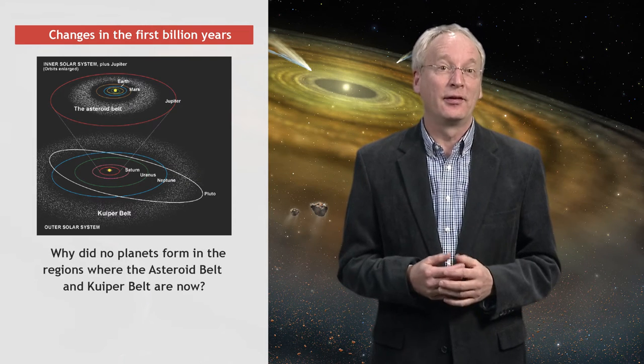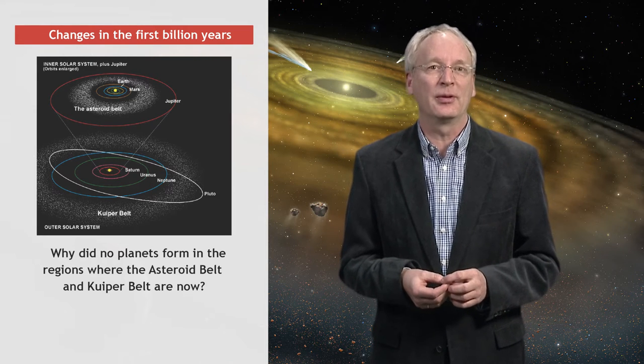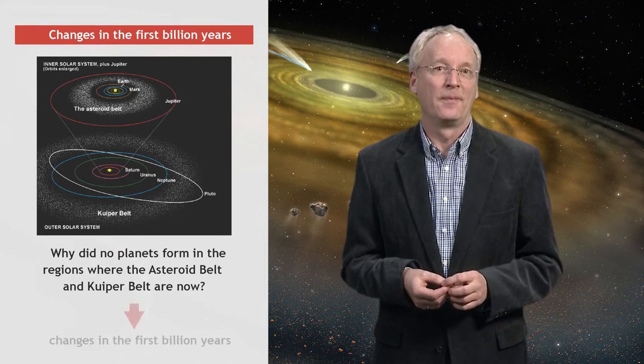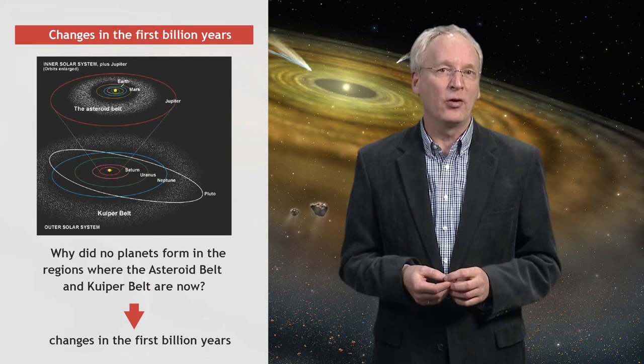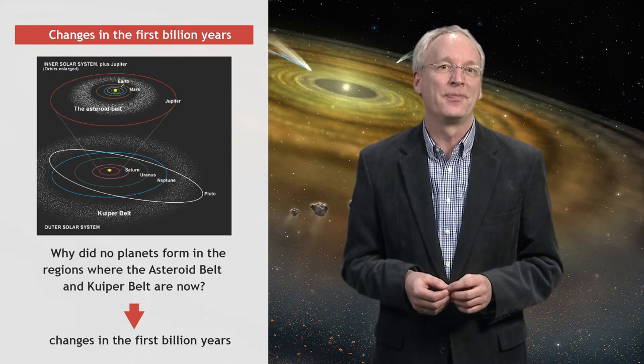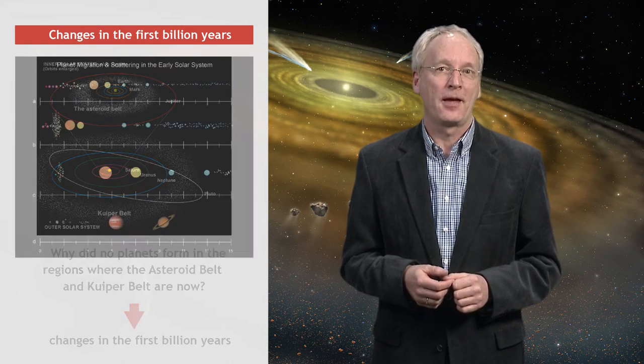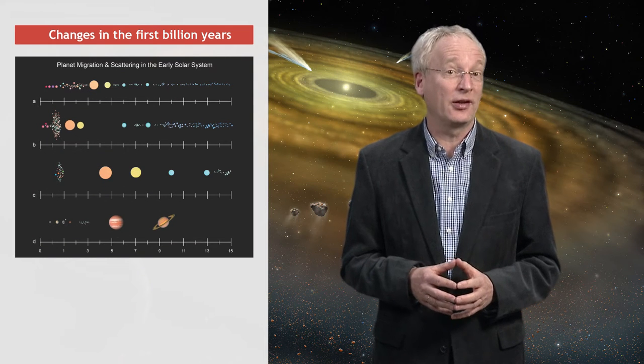We now think that this is a reflection of the fact that the solar system in its infancy was not stable and quiet at all. Looking at the amount of mass present in the belts and studying the distribution of orbits, we have concluded that planets moved around quite a bit. They were not formed in the places where they are today.